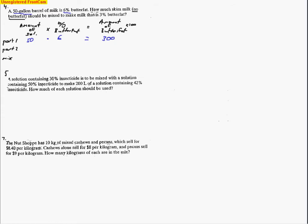They're asking how much skim milk should be added — we don't know, so that's where our variable goes. How much butterfat is in the skim milk? The problem gives us the hint of no butterfat, so we multiply by zero and get zero. When dealing with mixture problems, the two amounts from each part add together to make the total.